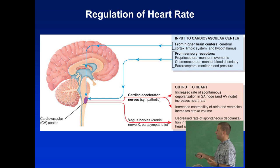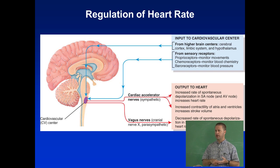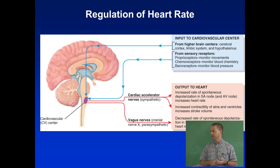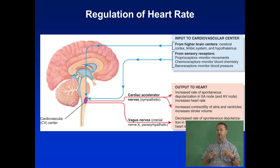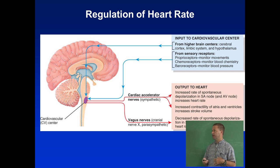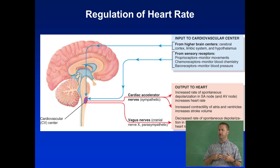There are also cardiac accelerator nerves — the sympathetic nerve — and cardiac dampening nerves — the parasympathetic nerve. These are two divisions of the autonomic nervous system. When I say autonomic, think automatic: this is the automatic nervous system. You're not conscious or aware of it, but it sets things like heart rate, respiration rate, and helps indirectly control some hormone levels.